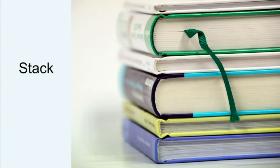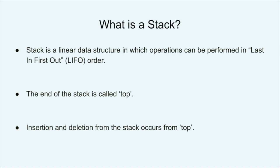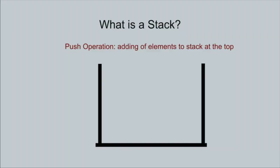What is a stack? A stack is a data structure where data can be accessed in a last in, first out order. The end of the stack is called the top and all the operations are performed at the top of the stack. Let's understand the working of the stack using this illustration.